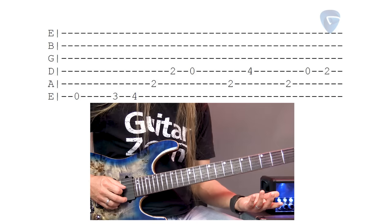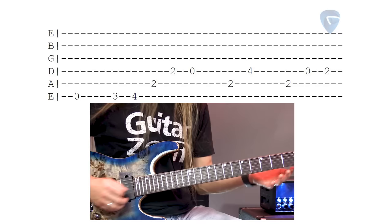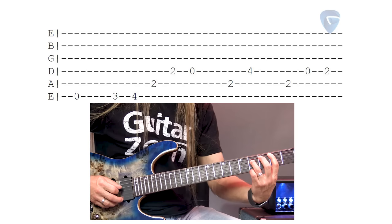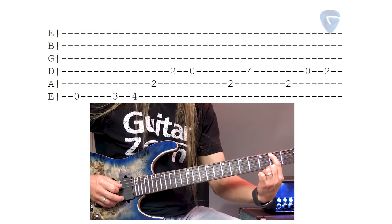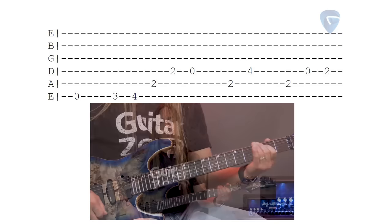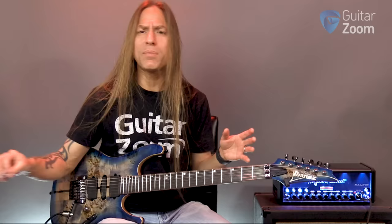Now this is a Beatles thing, if you're familiar with it. Then I've got a 2, 4 — back to my logic, that means 1st finger, 3rd finger — so I play 2 on the 5th string and 4 on the 4th string. Then 2, 0, 2 — 2 on the 5th string, 0, 2 on the 4th string. And there you go — you start putting it together.